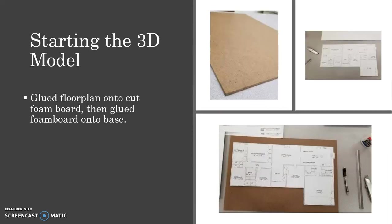To start the 3D physical model, I first had to cut out the floor plan, which was given at the scale of one-fourth inch equals one foot. I then measured the floor plan and cut out a piece of foam board to the exact size, which I then glued the floor plan onto. After this, I made the calculations for centering the floor plan onto the 18-inch by 24-inch masonite baseboard and glued that on as well.